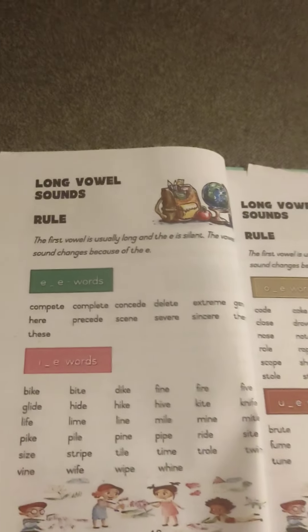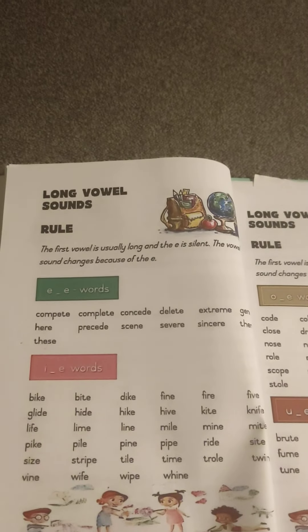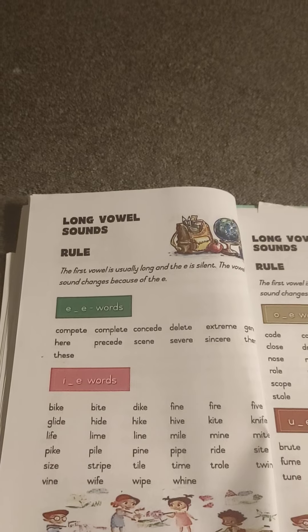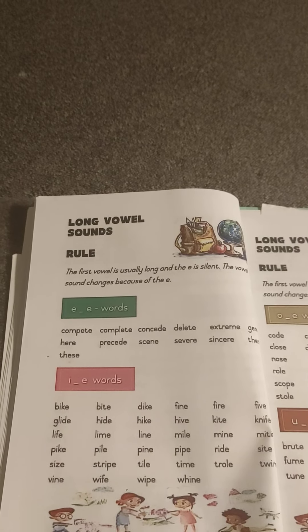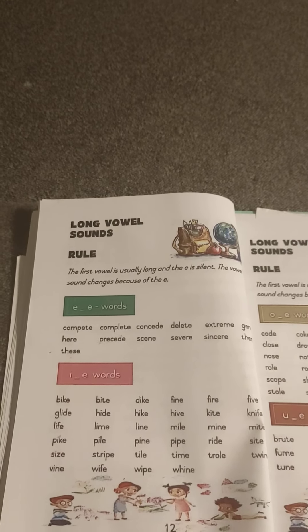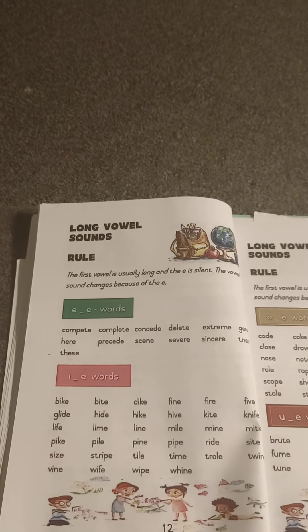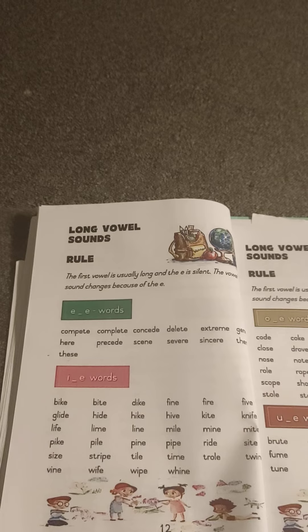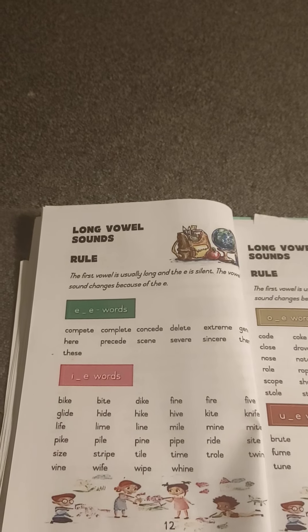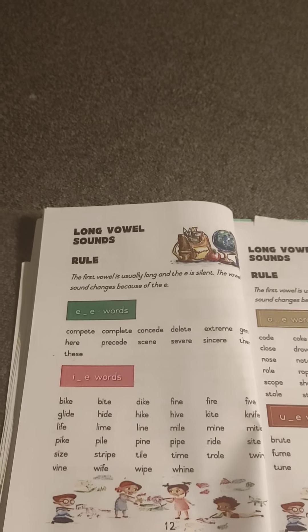The first vowel is usually long and the E is silent — the vowel sound changes because of the E. Long E examples: compete, complete, concede, delete, extreme, and more words with this pattern.